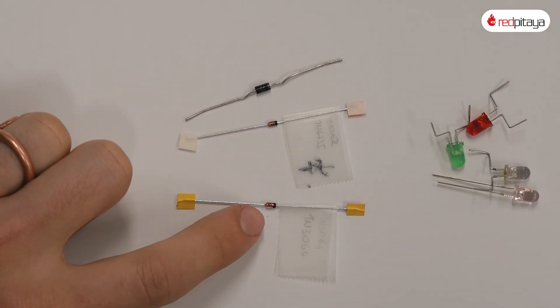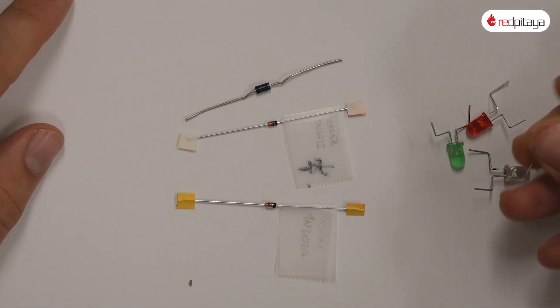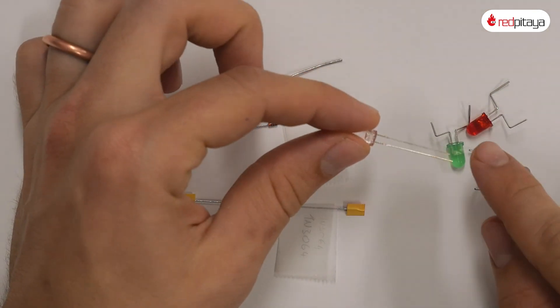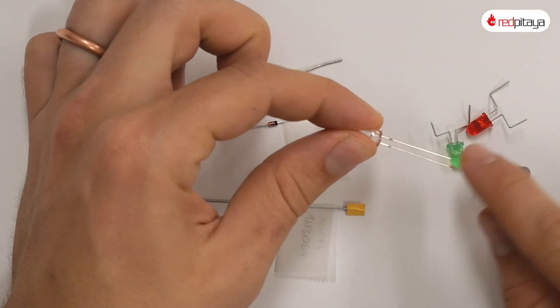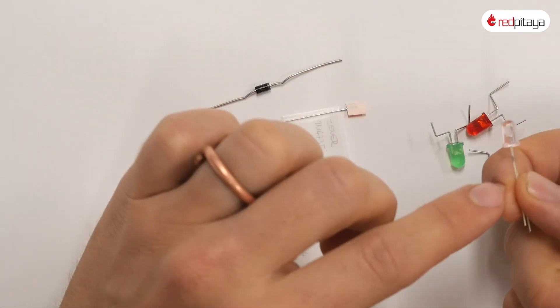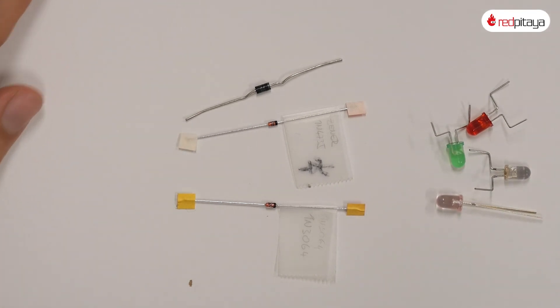Now back to the packages. So cathodes are marked with a straight line, but what if there is no line? That is very common with LEDs. Those have two distinctive markings. The negative lead cathode is shorter and the plastic bulb has a flat side on the cathode. With that out of the way, let's get back to the elephant in the room, that is why traces on the oscilloscope look like this.